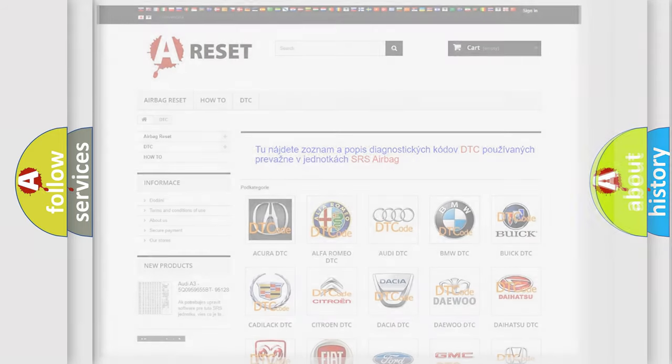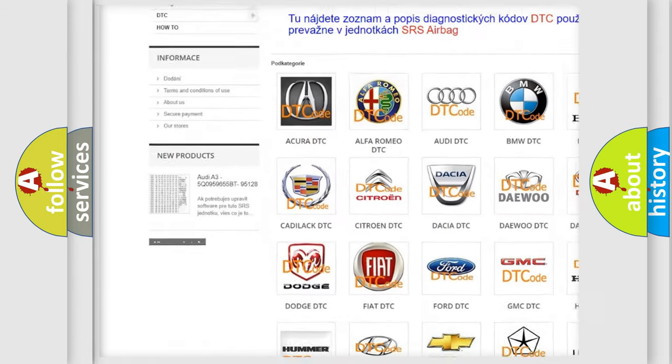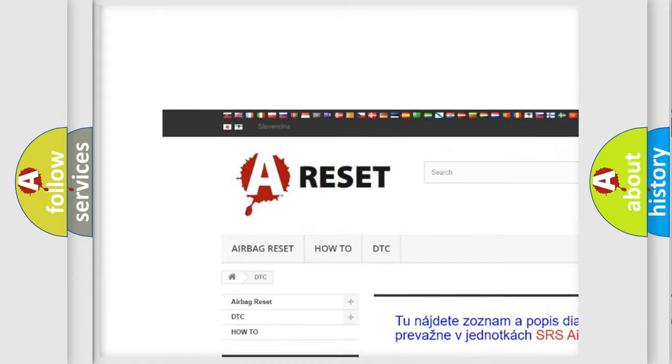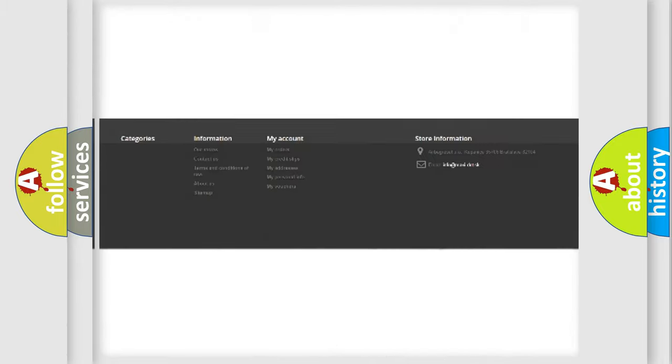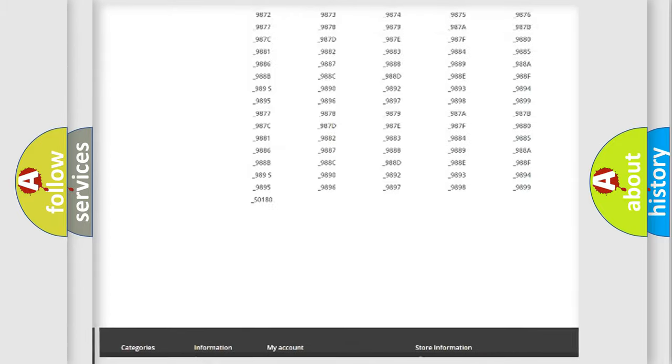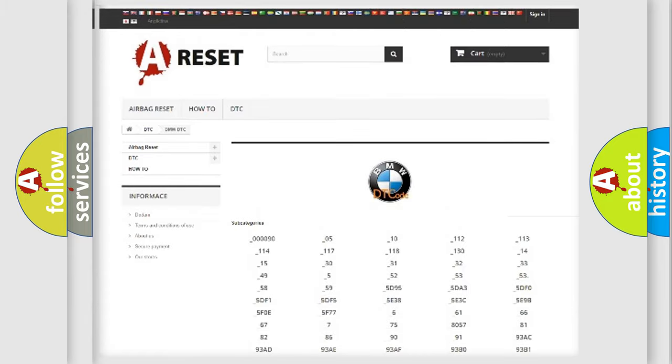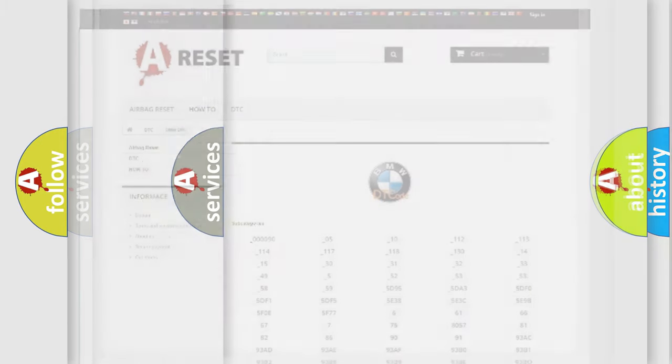Our website airbagreset.sk produces useful videos for you. You do not have to go through the OBD2 protocol anymore to know how to troubleshoot any car breakdown. You will find all the diagnostic codes that can be diagnosed in BMW vehicles, and also many other useful things.